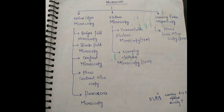Bright field microscope means a microscope in which the field of the image formed is bright. Dark field microscope means a microscope in which the field of the image formed is dark. Confocal microscope means one that focuses the image. Phase contrast microscope deals with rays that are out of phase or in phase.